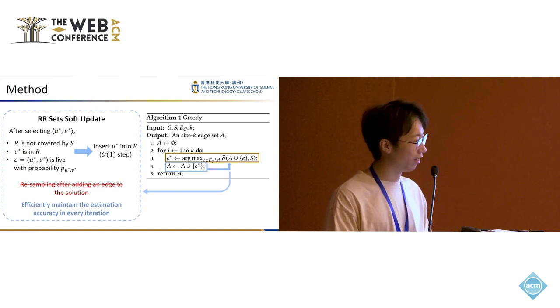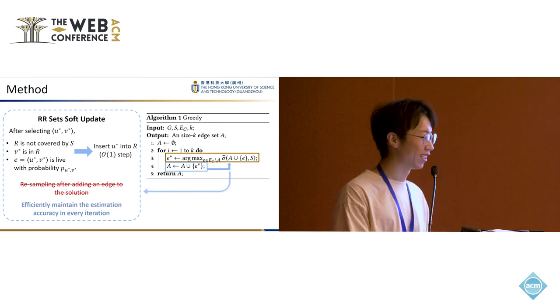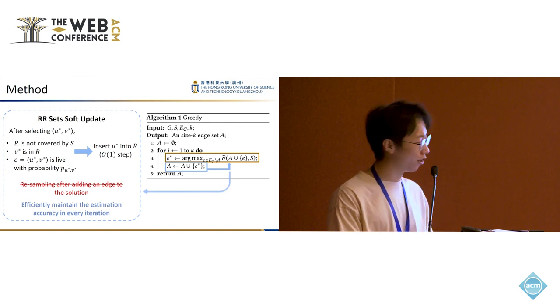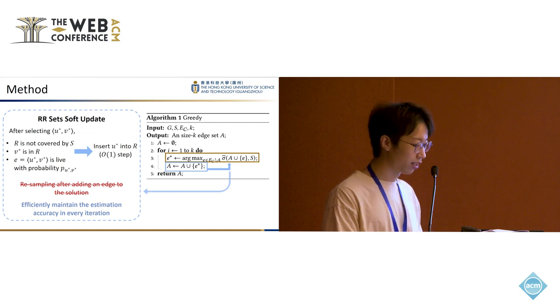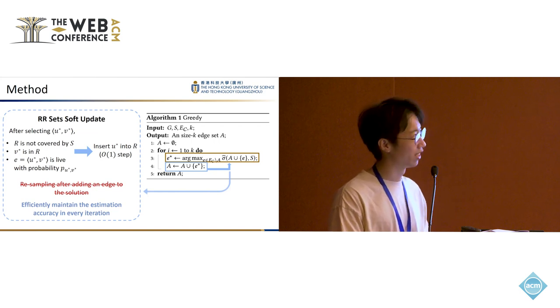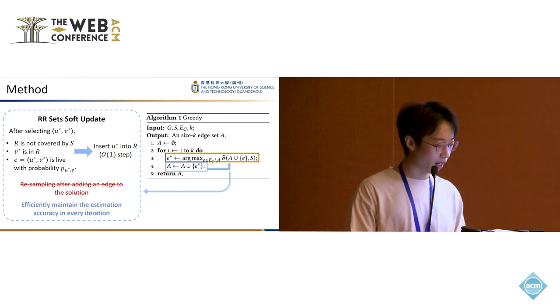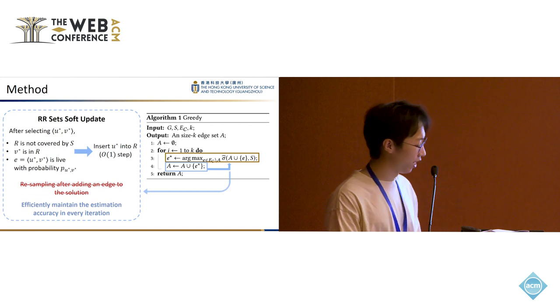However, we find that with the good property of our problem, which is recommending seeds to ordinary users, the RR sets update process can be implemented in a soft way. This means we can flip a coin for this RR set and see whether it will be influenced by u star or not.